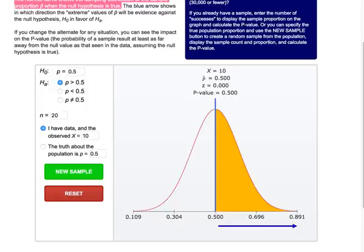The yellow shaded area under the curve will represent the probability of getting the sample proportion we actually observe or more extreme under the null hypothesis model.